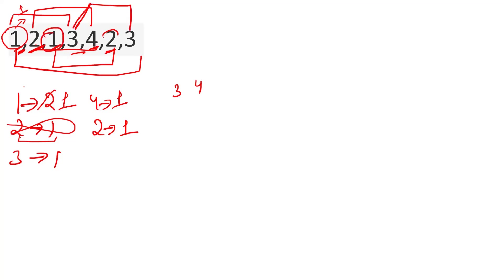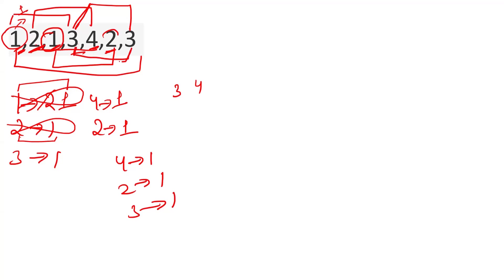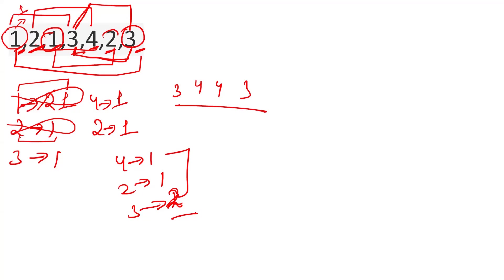For the fourth window — 3, 4, 2, 3 — we remove element 1, which has value 1, so we discard it. Then we encounter another 3, which is already in the hashmap, so we update its value to 2. The size of the hashmap is now 3 — giving us 3 distinct elements in this last window. So the output is 3, 4, 4, 3.